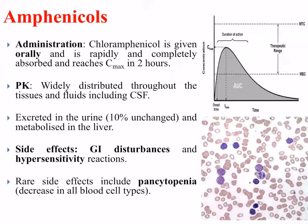Side effects include gastrointestinal disturbances and hypersensitivity reactions. A rare side effect with the amphenicols is something called pancytopenia, where there is a decrease in the number of all blood cell types. However, this is quite rare, and in those individuals their blood cells would have to be monitored.